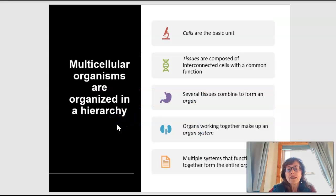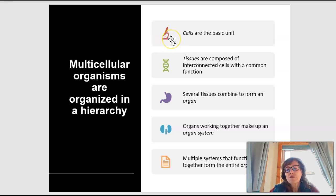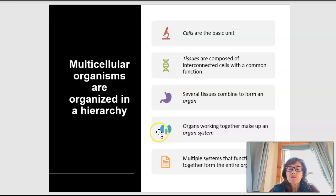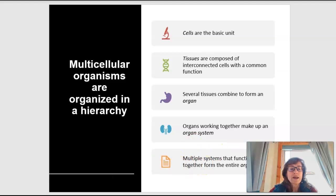When looking at multicellular organisms, we can see the way in which cells are organized. There's a hierarchy: a single cell is the basic unit, but cells of a similar type that connect for a particular function make up what we call tissues. Different types of tissues can combine to form organs. Then a group of organs that work together for particular functions — such as the digestive organs, or kidneys — is considered an organ system. Multiple systems functioning together make up the organism.